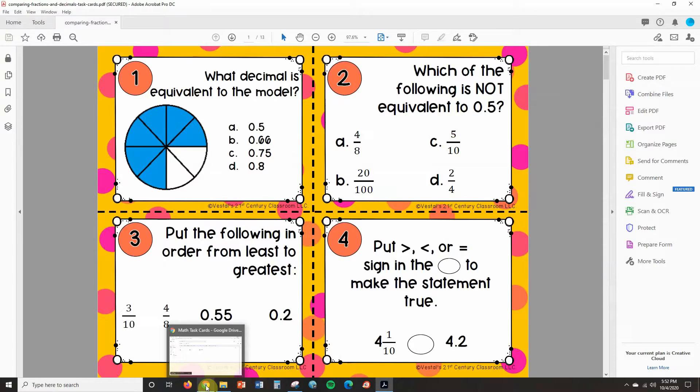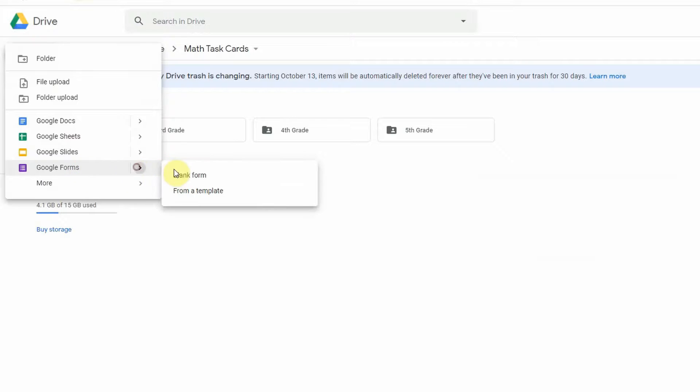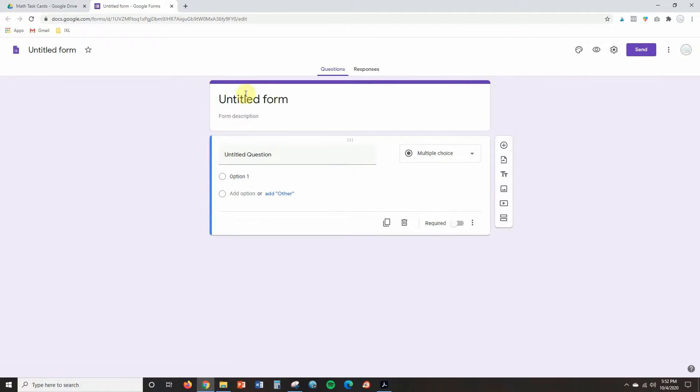And I will show you how to convert these four task cards to digital. So here we are in my Google Drive and I'm gonna click on new and create a new form. Okay, so the first thing I'm gonna do is I'm gonna name this comparing fractions and decimals.